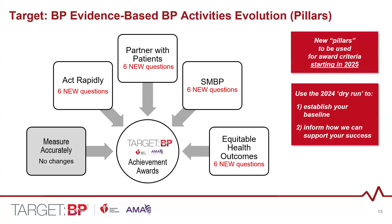The new questions span the pillars of Act Rapidly, Partner with Patients, SMBP, and Equitable Health Outcomes — six questions in each. These are in a dry run this year and will not count towards your award status, but they're a great opportunity to establish a baseline assessment of your practice. This data will be valuable to inform how we create resources to help you achieve them, and these answers will count toward award status in 2025. We hope you'll make every effort to answer them as accurately as possible.